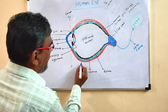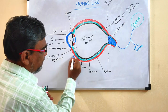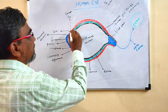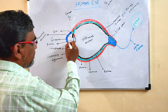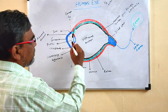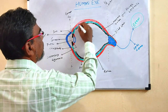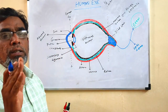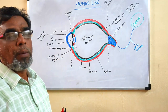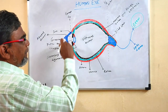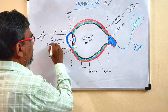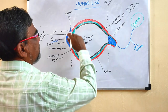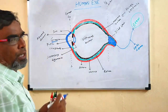Looking at the diagram, the outermost layer is shown in red and blue. The red color part running around the eye, and the blue color structure in front — this outermost layer is called sclera. The anterior part of the sclera is modified into the cornea. So cornea and sclera together form the outermost layer of the eye.